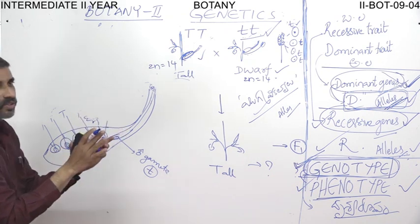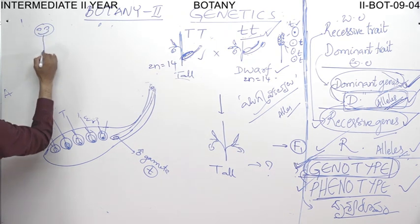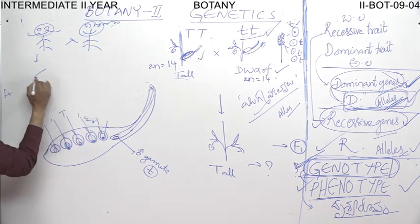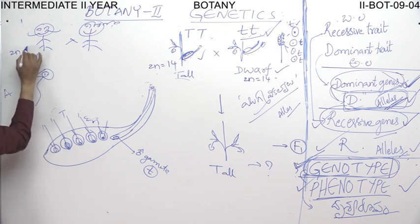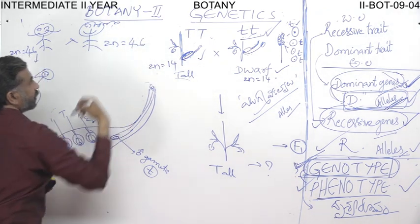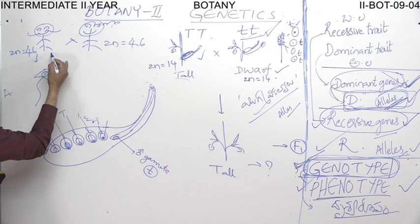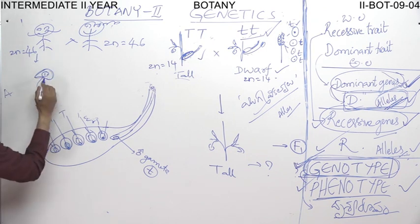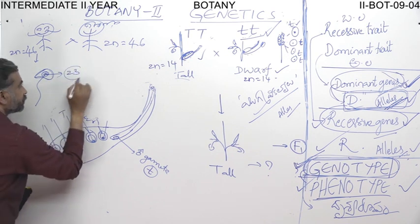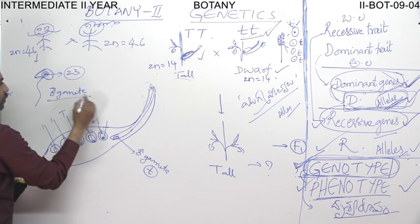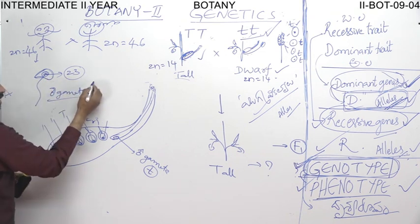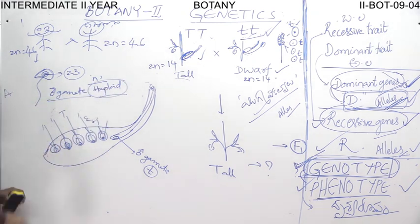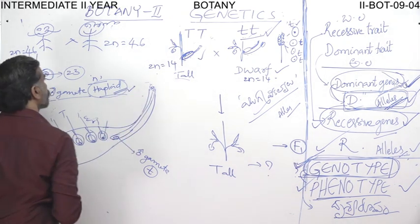If meiosis occurs, the chromosome number is reduced to half. For example, in humans the male parent and female parent both contain 46 chromosomes. The male parent produces sperm cells after meiosis in the seminiferous tubules. Sperm cells contain 23 chromosomes — the haploid number. The female parent produces egg cells, which also contain 23 chromosomes. The total number of chromosomes present in a gamete is represented by N, the haploid number.